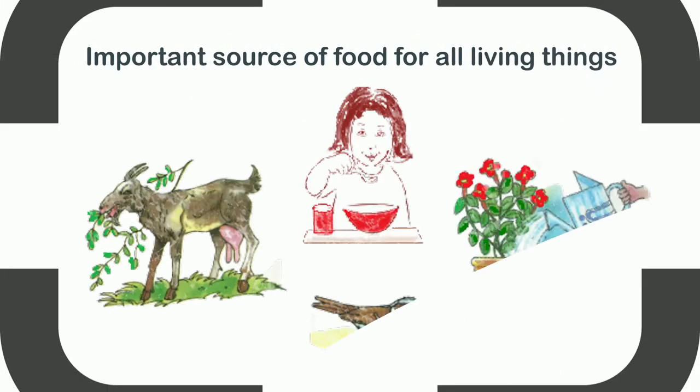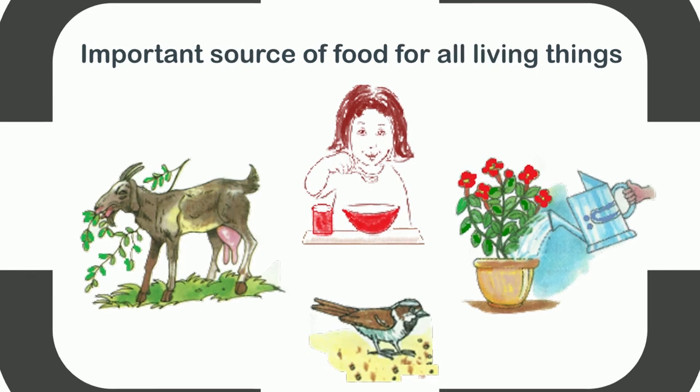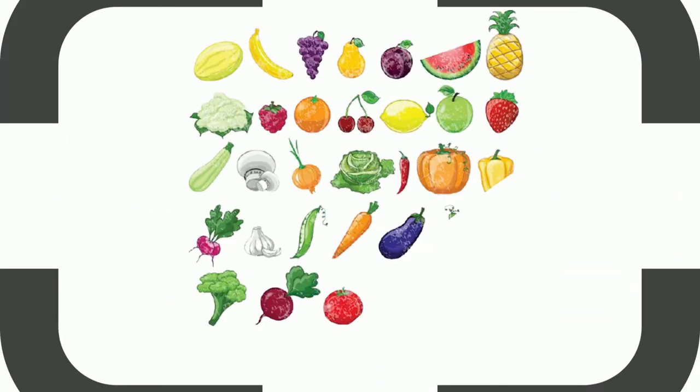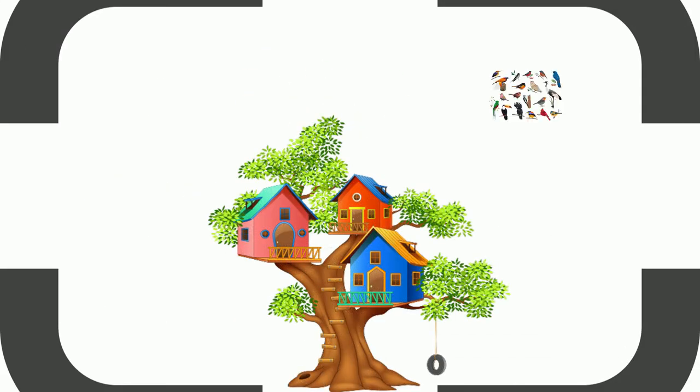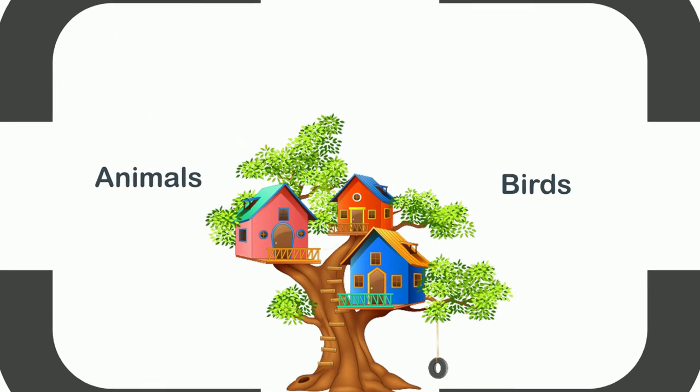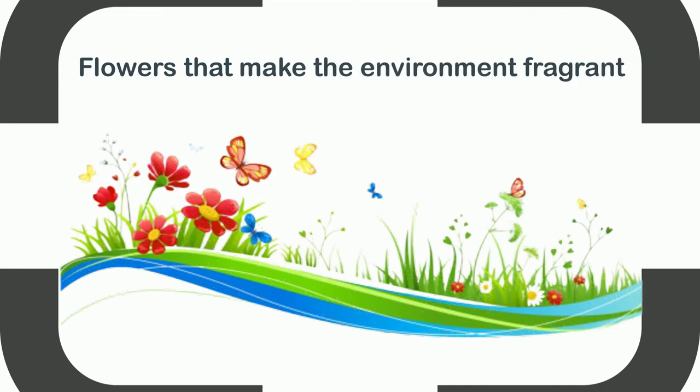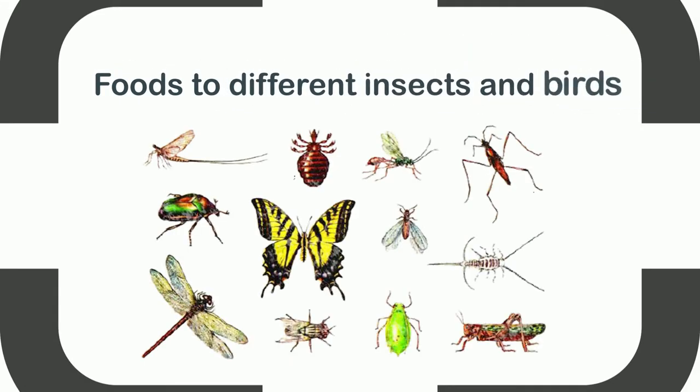They are an important source of food for all living things. They give us different types of fruits, vegetables, and grains to eat. They are a home for many birds and animals. They also give flowers that make the environment fragrant and beautiful, and also give food to different insects and birds.